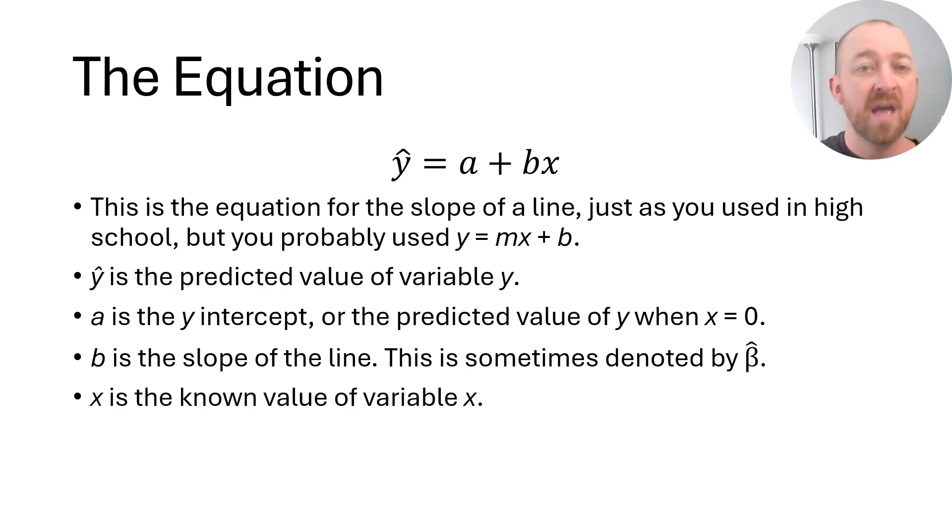And then B, in this case, is the slope of the line. In other words, it's the rise over the run or it's how much variable Y rises for every one unit increase in the value of the X variable. And I already said that X is the value we know about X. So in this case, we're predicting the value of the Y variable when we already know the value of the X variable. But we have to know the values of A and B. Let's take a look at those equations now.